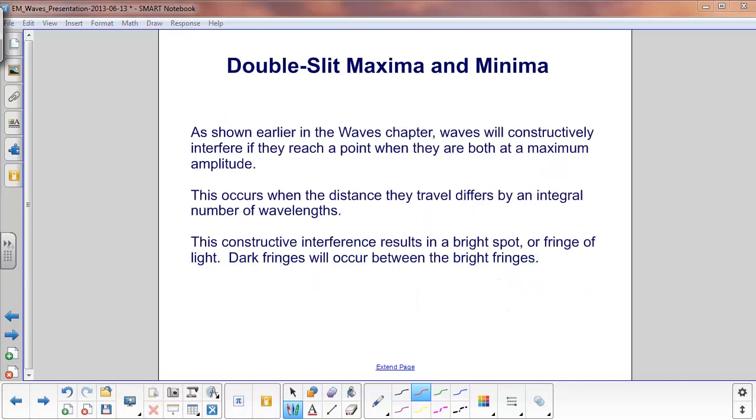This was shown earlier in the waves chapter. Waves will constructively interfere if they reach a point where they are both at a maximum amplitude. This will occur when the distance they travel differs by an integral number of wavelengths, like one, two, three, four, etc.